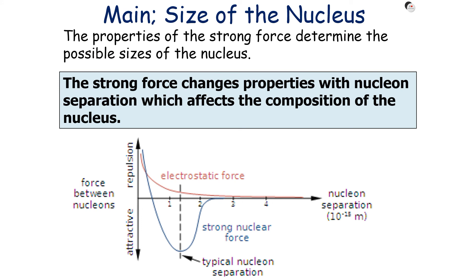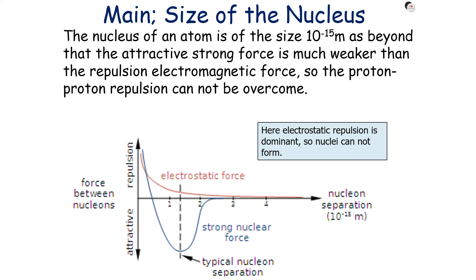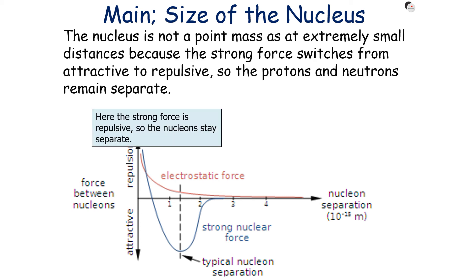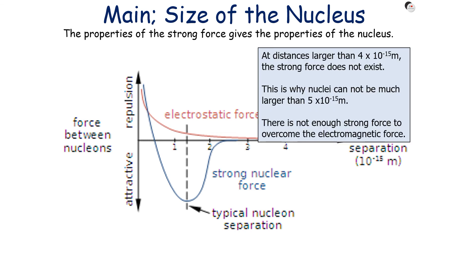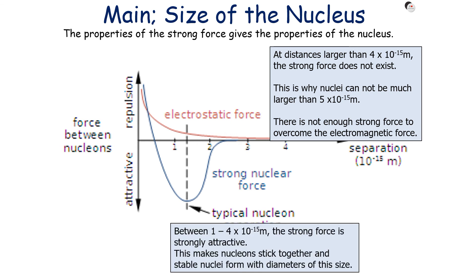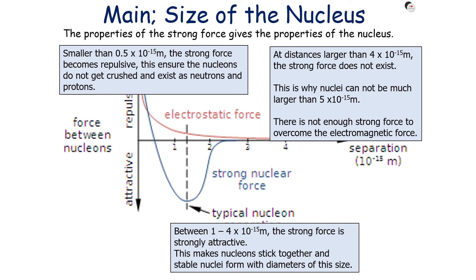The strong force changes properties with nucleon separation, which affects the composition of the nucleus. The nucleus of an atom is of size 10 to the minus 15 metres, because beyond that the attractive strong force is much weaker than the repulsive electromagnetic force and proton-proton repulsion cannot be overcome. The nucleus is not a point mass because at extremely small distances the strong force switches from attractive to repulsive, keeping protons and neutrons separate. At distances larger than about 4 times 10 to the minus 15 metres, the strong force does not exist, which is why nuclei cannot be much larger than 5 times 10 to the minus 15 metres. Between 1 to 4 femtometres the strong force is strongly attractive, making nucleons stick together. But smaller than 0.5 femtometres, the strong force becomes repulsive, ensuring nucleons are not crushed and exist as distinct neutrons and protons.